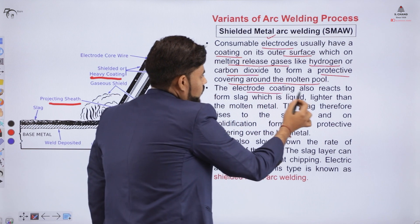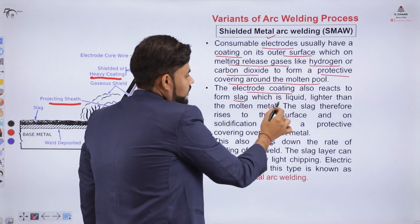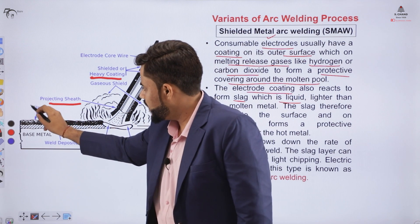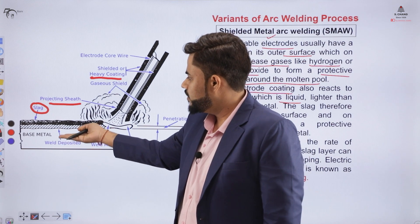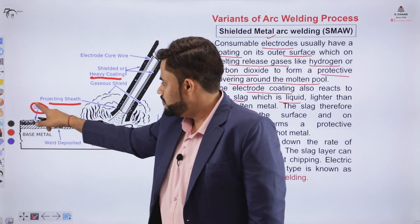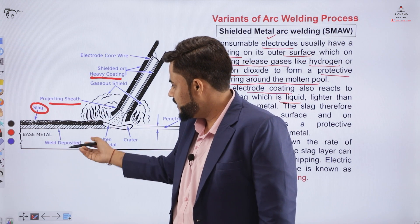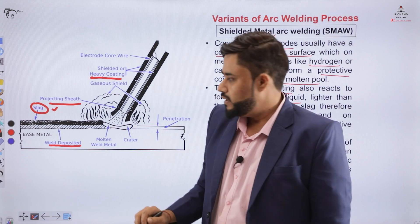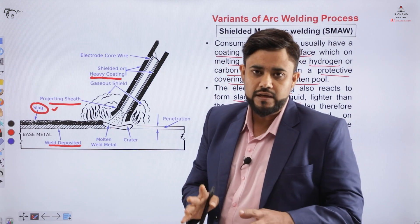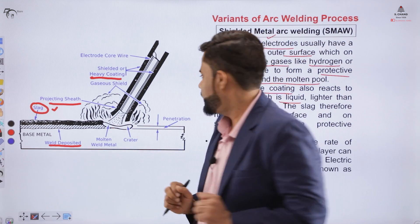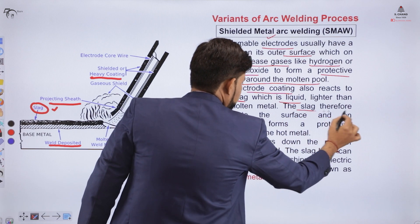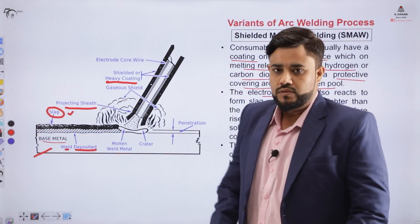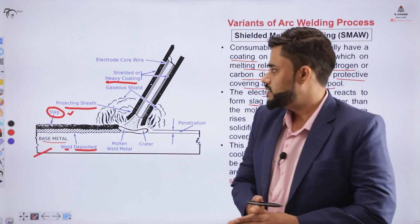The electrode coating reacts and ultimately forms a slag, which is liquid. That liquid slag moves to the upper surface of the base metal and the weld deposition occurs below it. The slag part sits above the weld being prepared, acting as a protective layer. This slag generally rises to the surface and when solidification occurs it forms a protective layer over the hot metal.